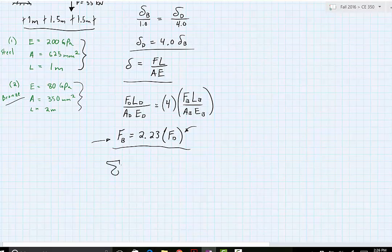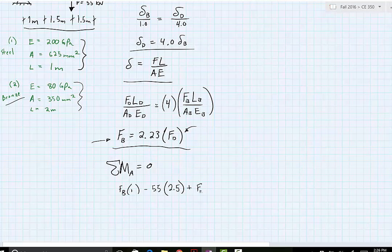So if we sum the moments at A which equals 0, then we get the force of B acting 1 meter away minus the point load 55 kilonewtons acting 2.5 meters away, and then plus the force at D acting 4 meters away.